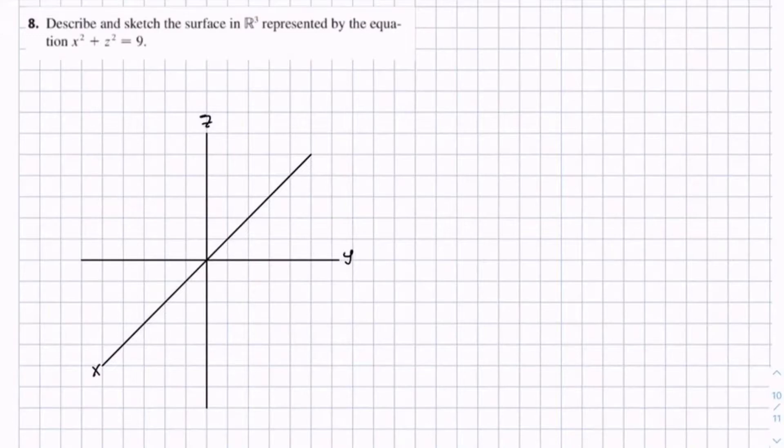x squared plus z squared equals 9, is there's no y. So that means y is unbounded. y equals all real numbers.